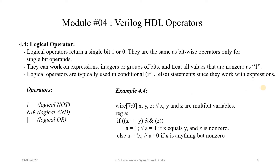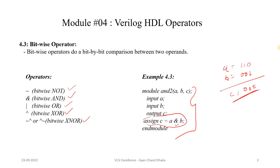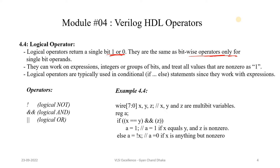Now let's see the fourth type of operator which is the logical operator. You have to be careful to distinguish between bitwise and logical operators, as they are often confused. The logical operator basically returns a single bit — 1 or 0, meaning true or false. They are the same as bitwise operators if the operands are single-bit variables. Logical operators can work on expressions, integers, or groups of bits and treat all non-zero values as 1.